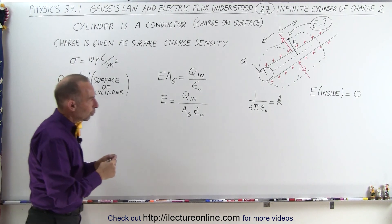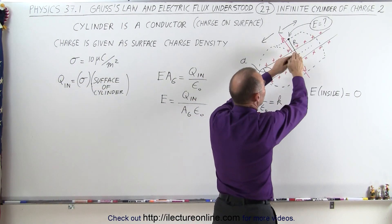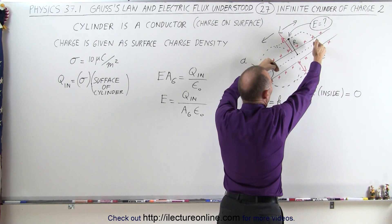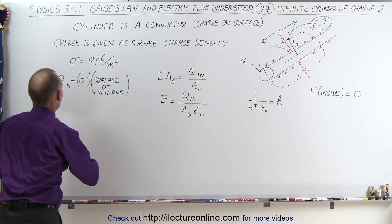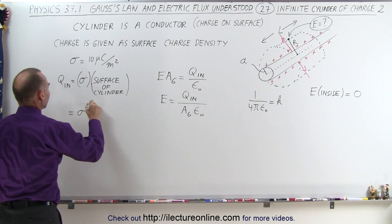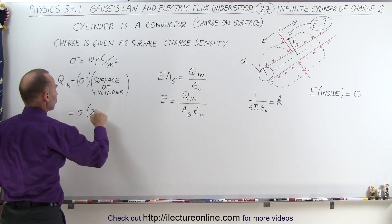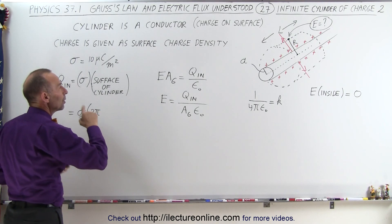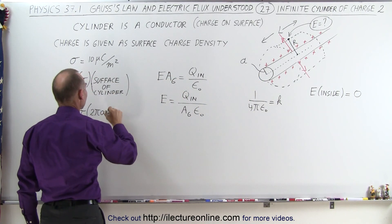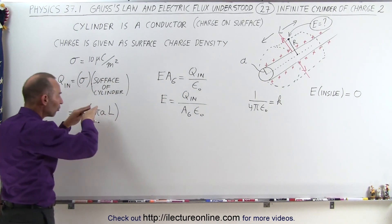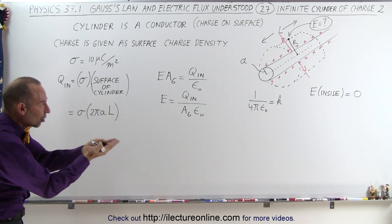Now notice that we don't worry about the end portion, we only care about the side that carries the charge. There will not be any charge on the ends of the small piece of that cylinder, so in this case, that will be equal to sigma times the circumference times the length. The circumference will be 2π times the radius of the cylinder, which is A, 2πA times the length.